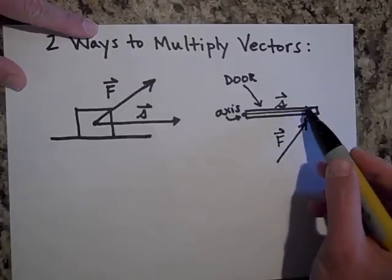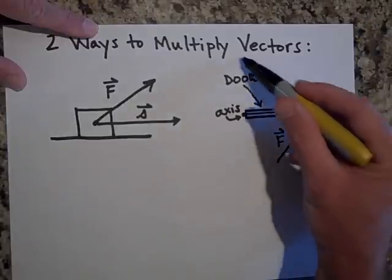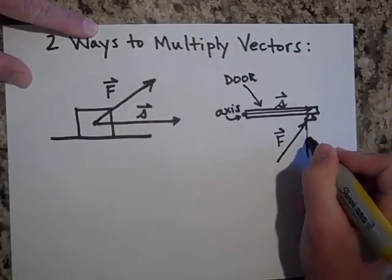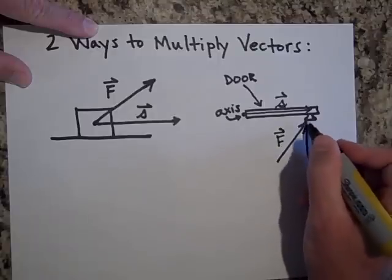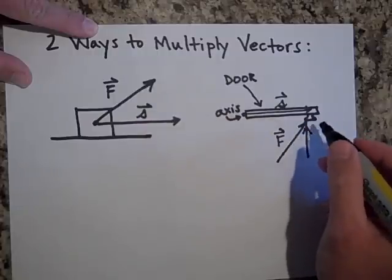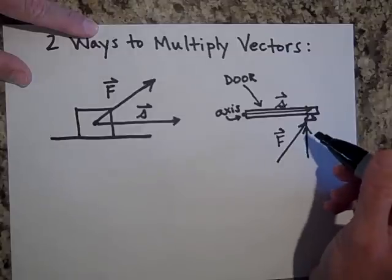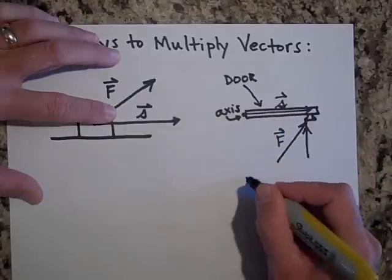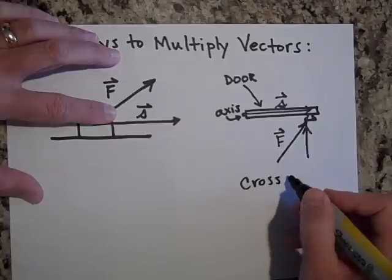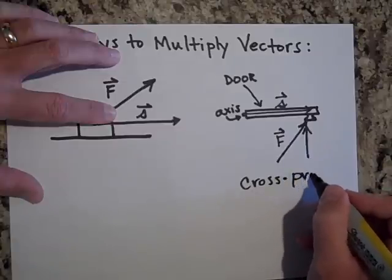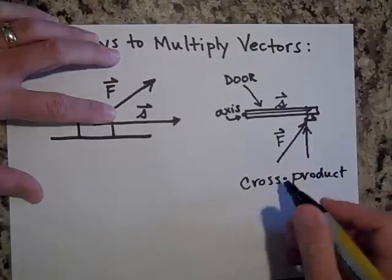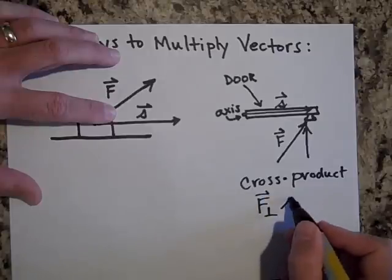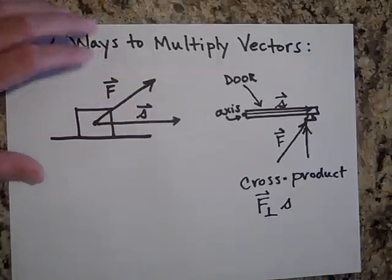When you push the door it swings open, but the only part of the force that gives you that twist is the part that's perpendicular to s. That quantity is called torque. We use the cross product when the perpendicular component matters. We use the dot product when the only part of the force that matters is the part that's parallel to s.